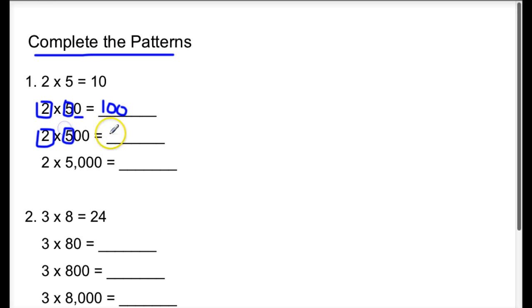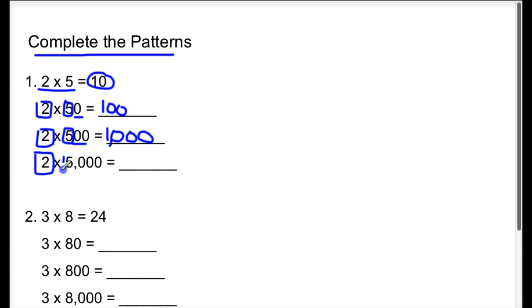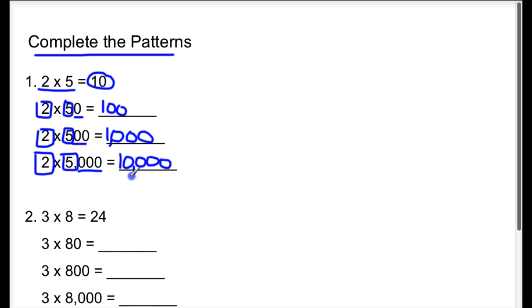Two times five hundred — basic fact of 10, underline the zeros, and this time we need two. We need to be careful when looking at problems like this one, because the product of two times five is 10, which already contains its own zero. So we definitely want to make sure we're putting the proper amount of zeros. Boxing in the basic facts and underlining the zeros will keep us on track. Two times five is 10, and we need three more zeros — in addition to the zero already in 10 — giving us 10,000.